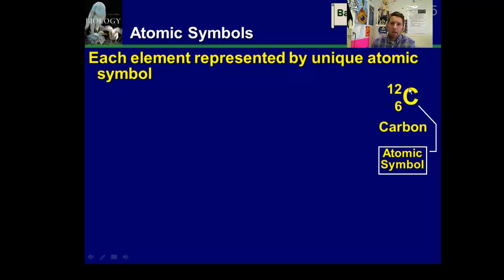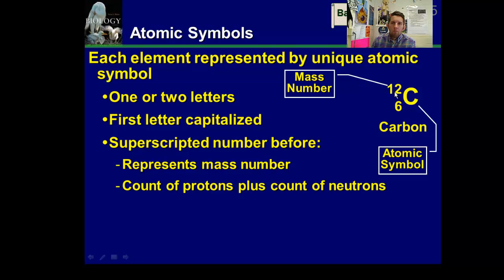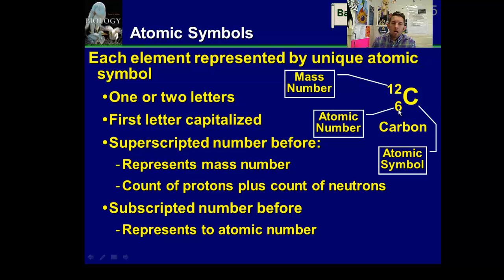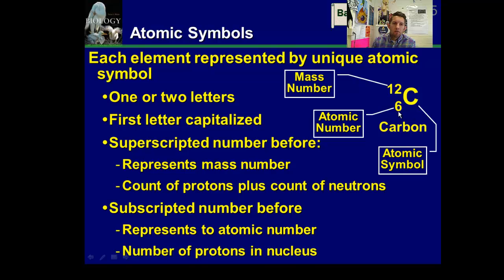You'll see when we look at the periodic table, it tells you a lot about an element. Each one's unique. They have an atomic symbol. Usually a capital letter. If it's two letters, the second letter is going to be lower case. This is our atomic mass, or the mass number. And then the atomic number. Mass number tells you the mass of one atom of that particular element. So, one atom of carbon has a mass of 12 amu. That's the superscript above the subscript. Here's your atomic number. Atomic number tells you the number of protons. So, one atom of carbon, not only does it have a mass of 12 amu, but it contains six protons. There it is.